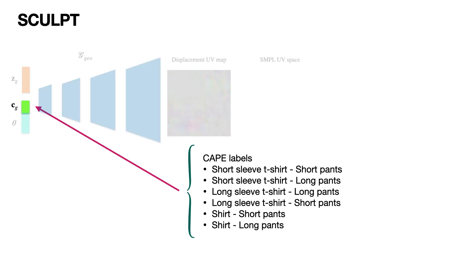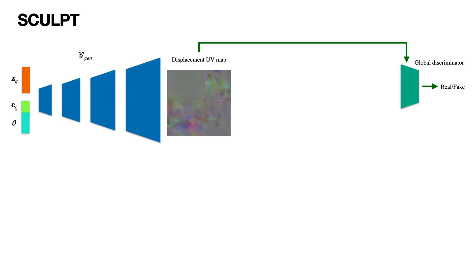CG is a categorical label given by the CAPE dataset. The full set of used categorical labels is shown here. The geometry generator is trained with the adversarial loss with a global discriminator. After training the geometry generator, we train the texture map generator.